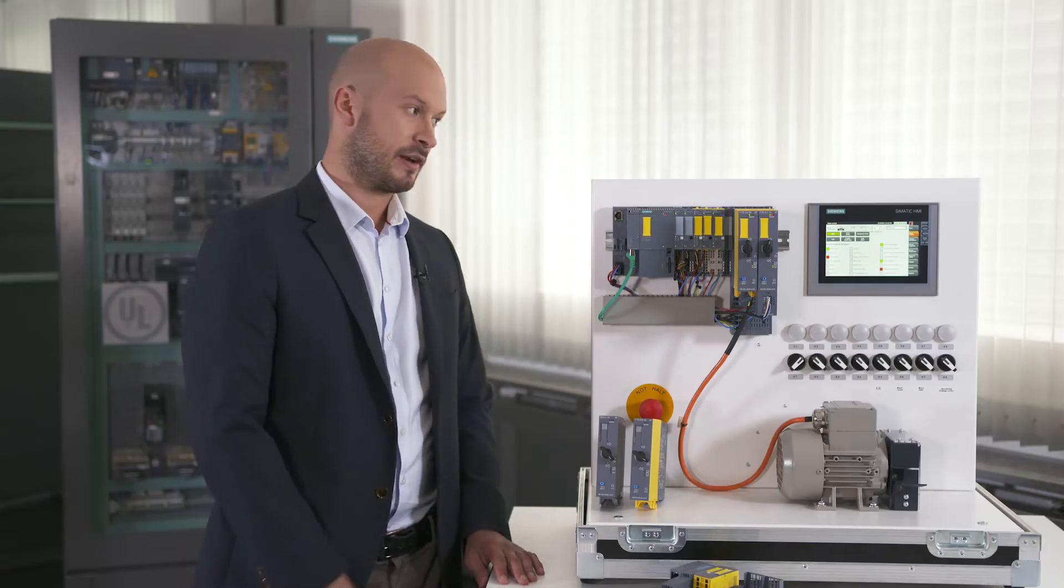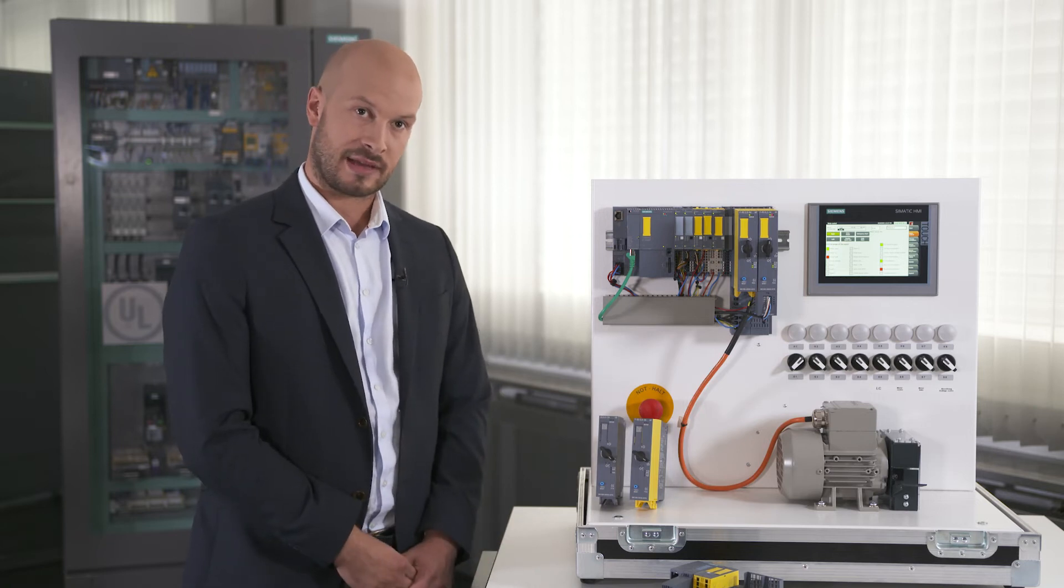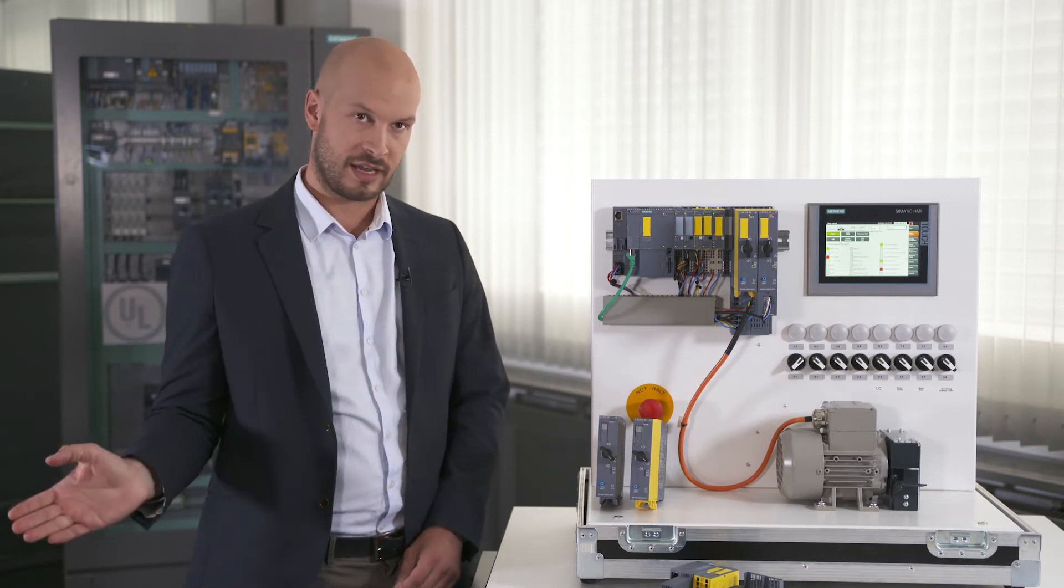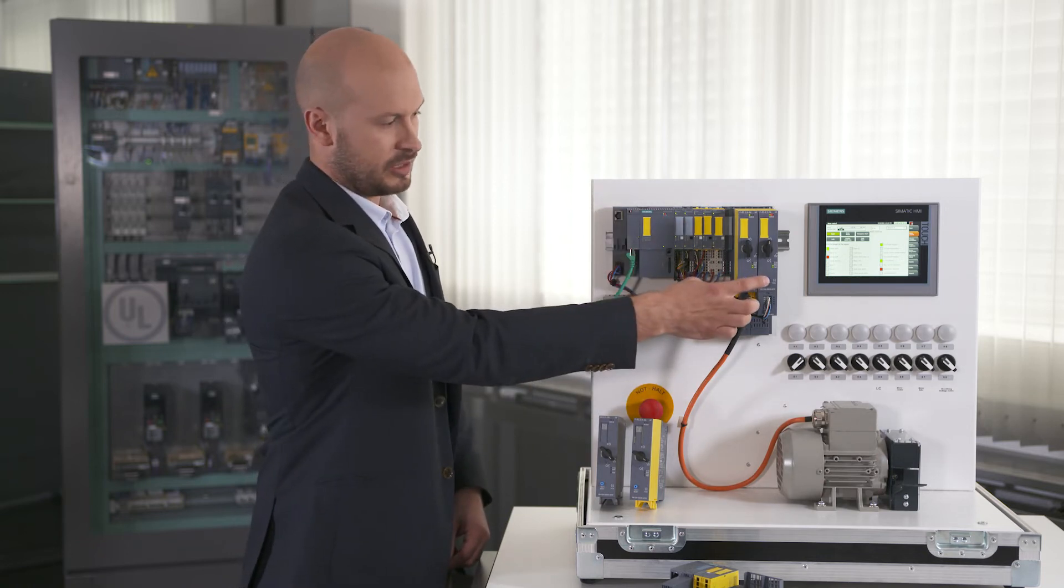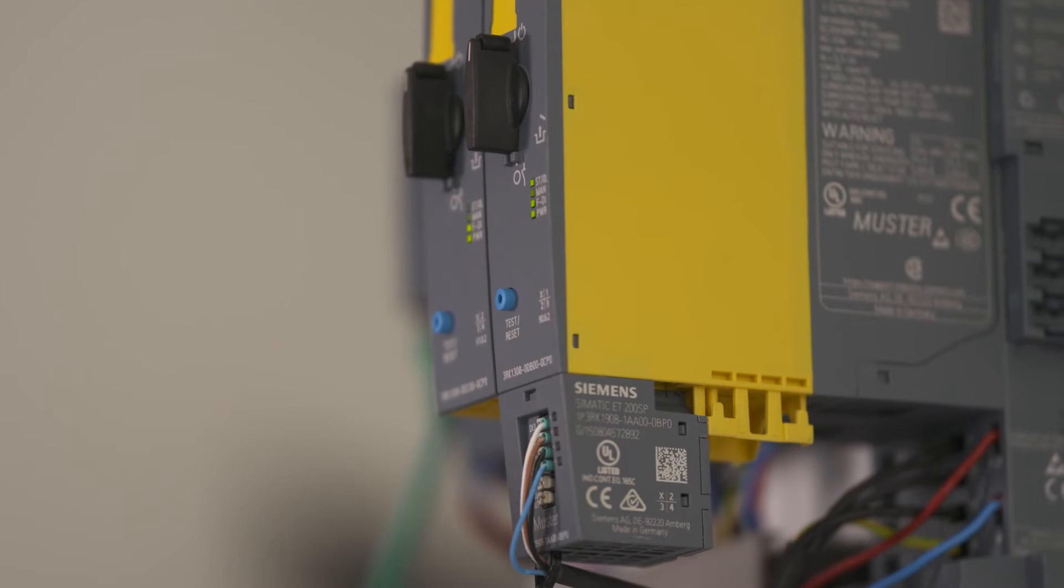You now have a system that is stationary but you can read off immediately on the HMI what sort of fault has occurred. Then you just have to remove the blockage and perform a reset using this button here or the display and the system will start running again.